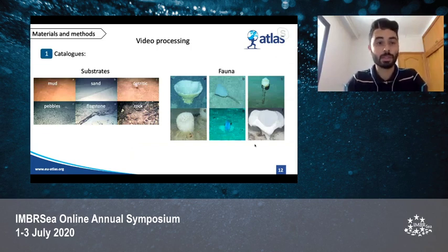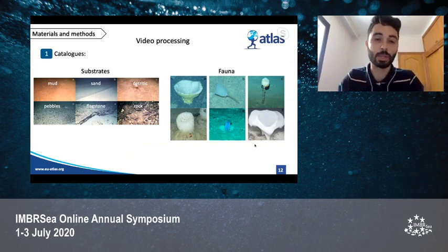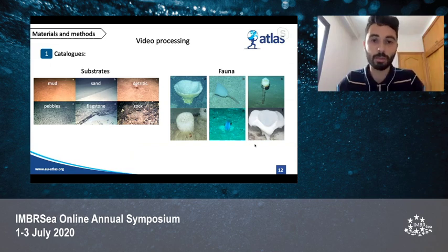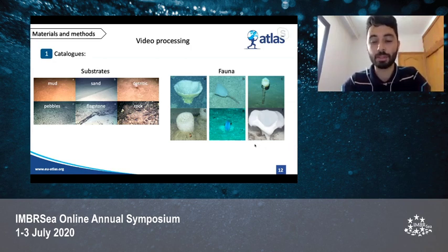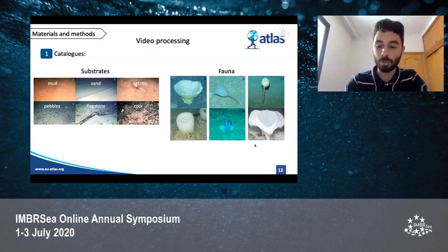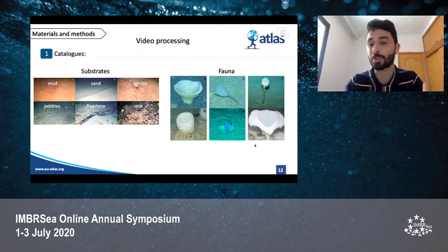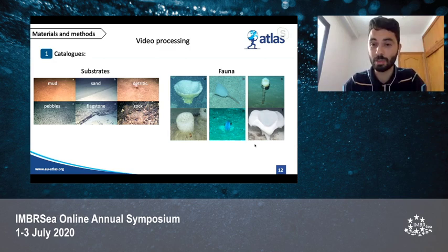The video processing consisted of three main steps. The first was the creation of catalogs — one for substrates, considering soft substrates (mud, sand, and detritic) and hard substrates (pebbles, blackstone, and rock). For fauna, together with the help of scientists and experts, organisms were identified to the lowest taxonomical level possible. However, many times this wasn't possible because it is really hard to identify them through remote means, so a morphospecies name was given — a concept commonly used because of this difficulty.